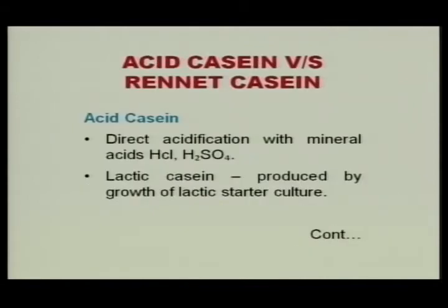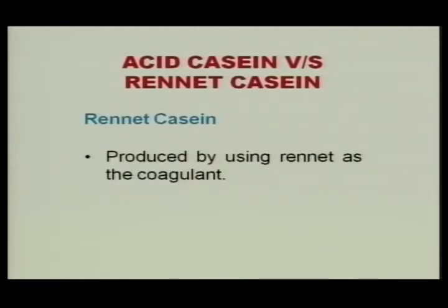There are various methods to classify casein. One is by the coagulating agent used — acid casein manufactured by direct acidification with mineral acid such as HCl and H2SO4. Lactic casein is produced by growth of lactic starter culture. Another type is rennet casein, which is also an edible casein produced using rennet as the coagulating agent.